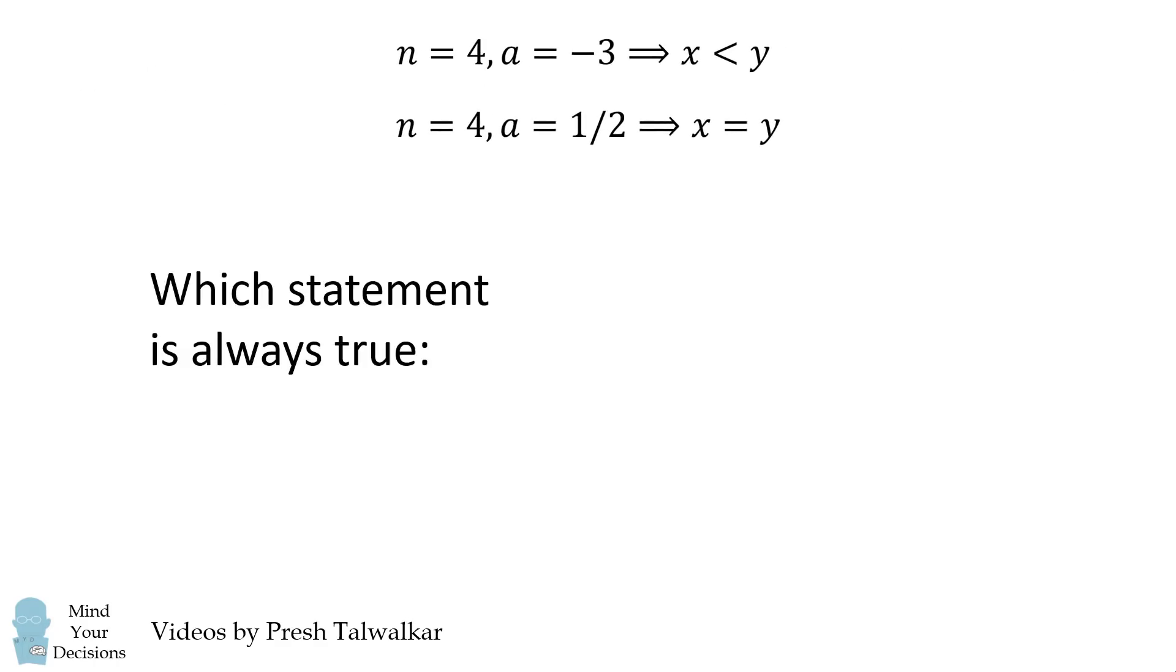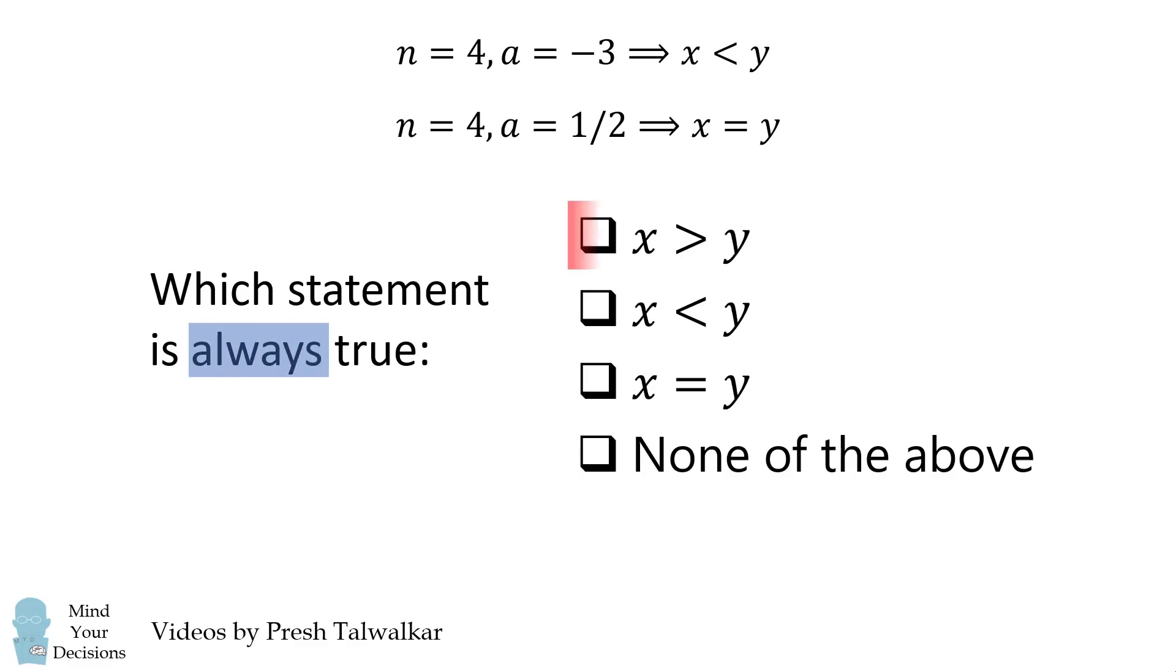Which of the following statements is always true? Well, can we say that x is always greater than y? No, we can't because sometimes it's less than y and sometimes it's equal to y. Again, we can't say that x is always less than y because sometimes it's equal to y. And we can't say x is always equal to y because sometimes it's less than y. Therefore, all of these are false and the correct answer is none of the above.